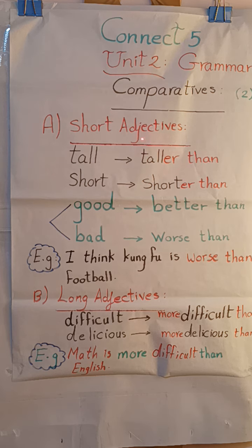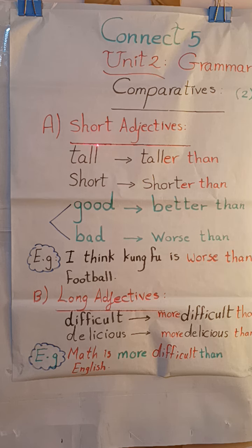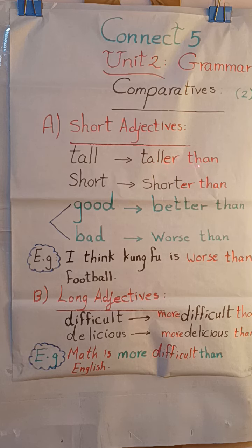First of all, we have to know that there are two sections of adjectives. The first section is short adjectives. To form the comparative, simply add -er to the adjective and then the word 'than'. For example: taller than, or shorter than.